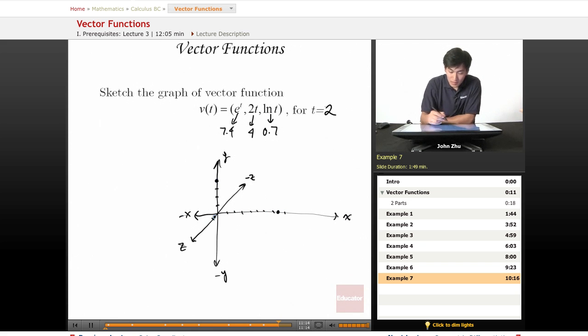So drawing these, we have in the x, y plane here, but then we must shift this over by a little bit on the z. So we get something like this. And this is our v of t.